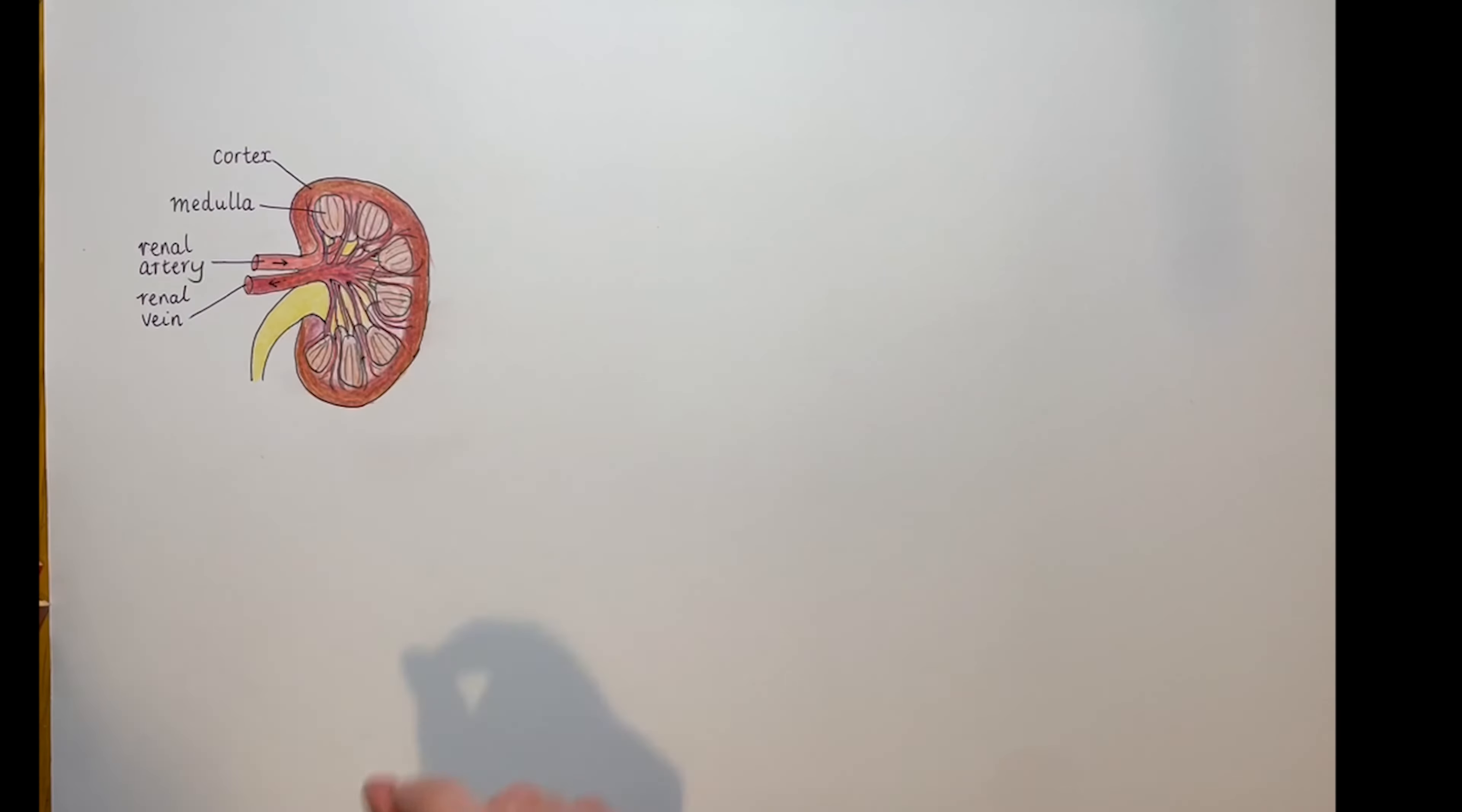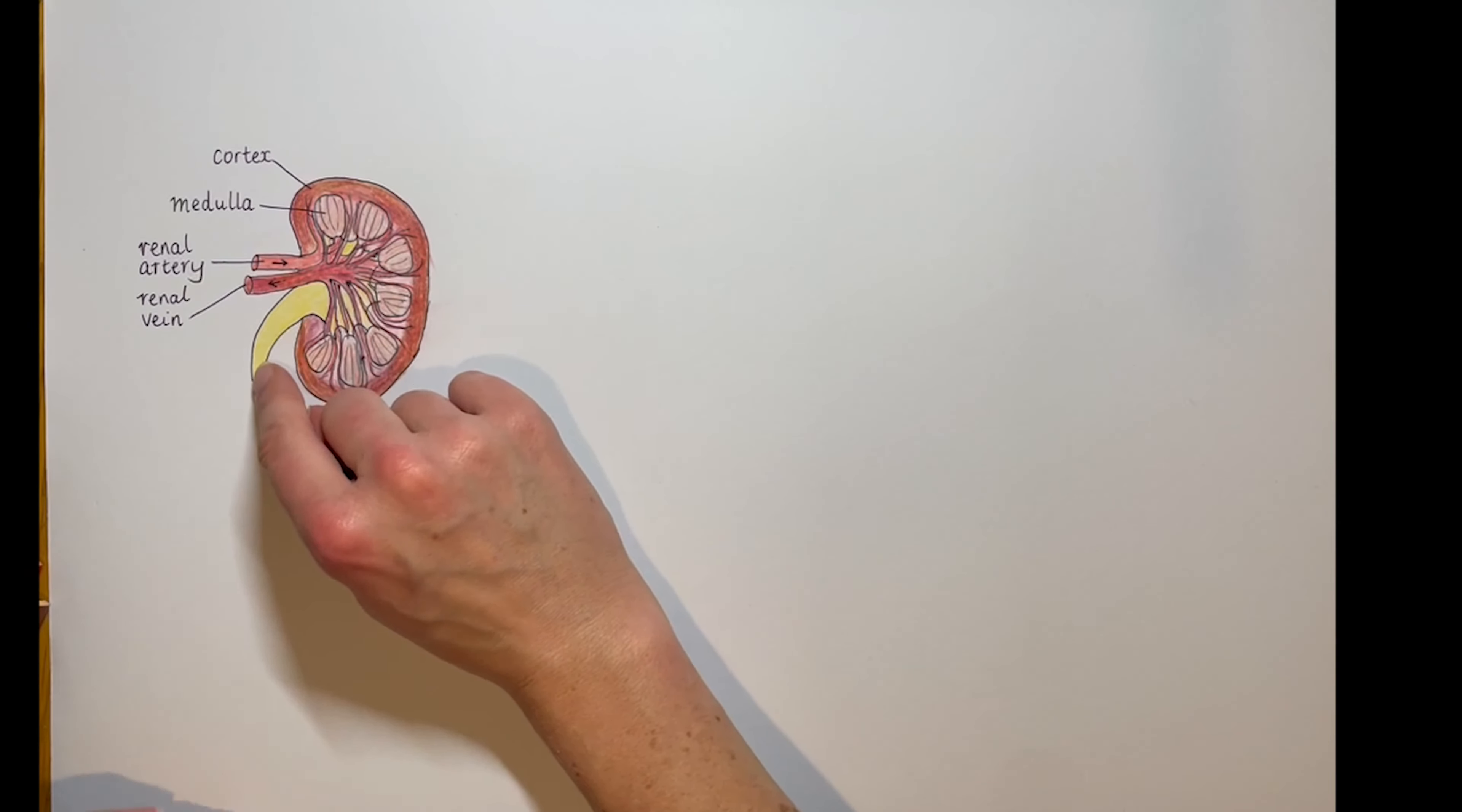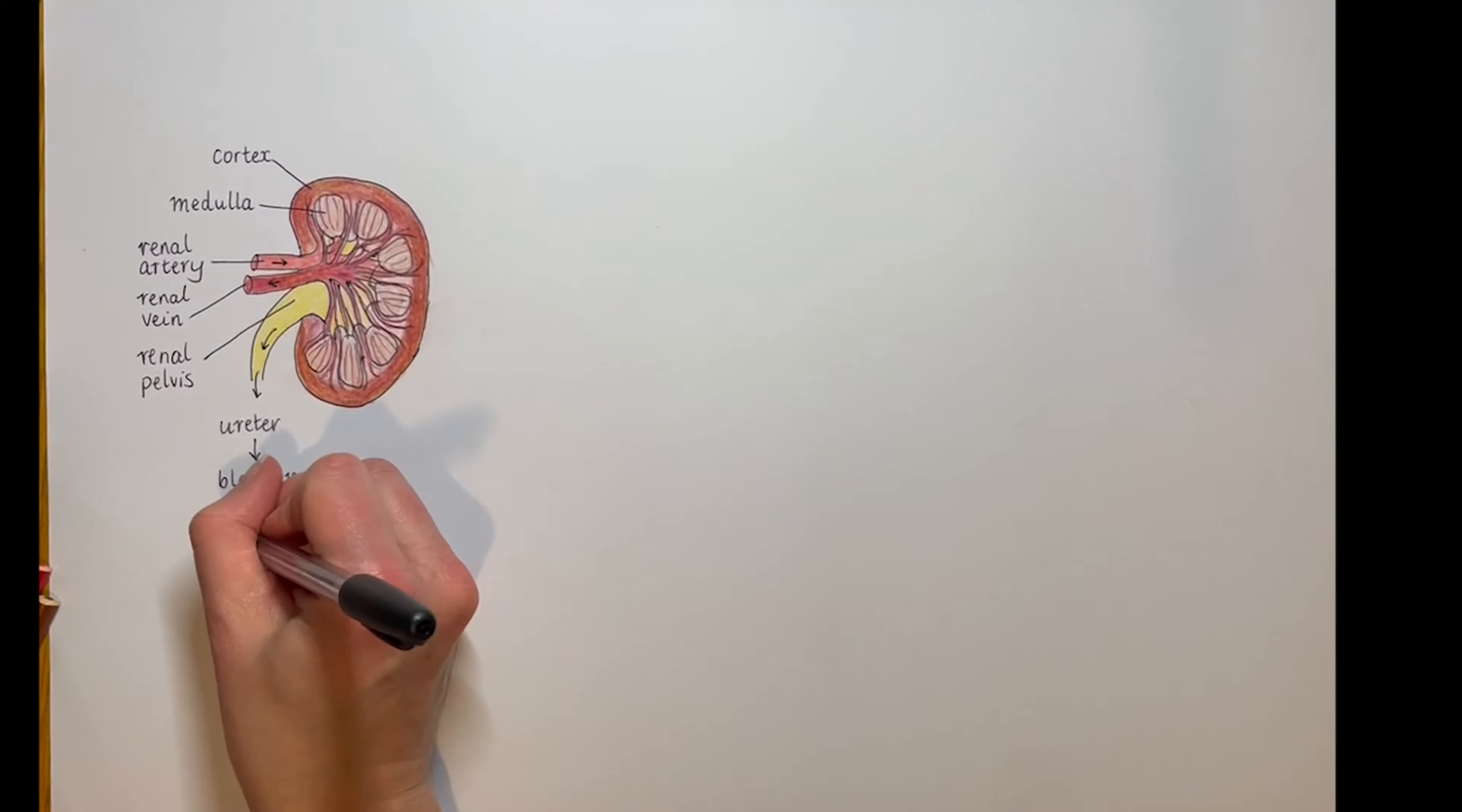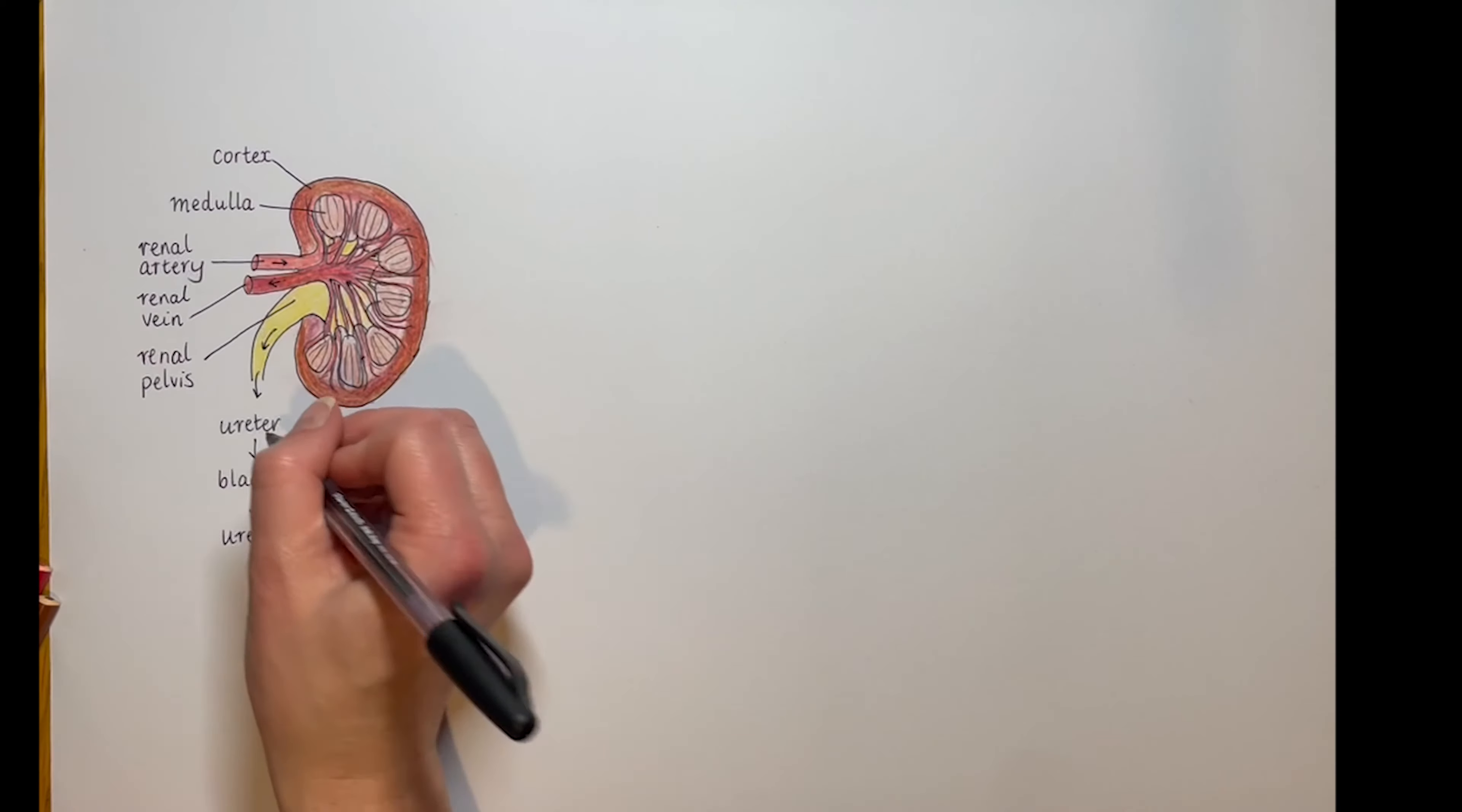So here in our outer cortex and then our medulla below, we have lots of tiny tubes where blood is filtered and the bits you don't keep are called urine. It drains into the renal pelvis, which subsequently drains via the ureters into the bladder, controlled by a ring of muscle, ready for you to wee out of the urethra. Note: ureter enters the bladder, urethra is to the outside of your body.